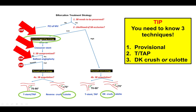This is a case of provisional stenting in which a stent was placed over the ostium of the side branch. The side branch became compromised as shown by the pressure wire, and that was solved by doing balloon angioplasty, kissing balloon inflation, and re-POT.